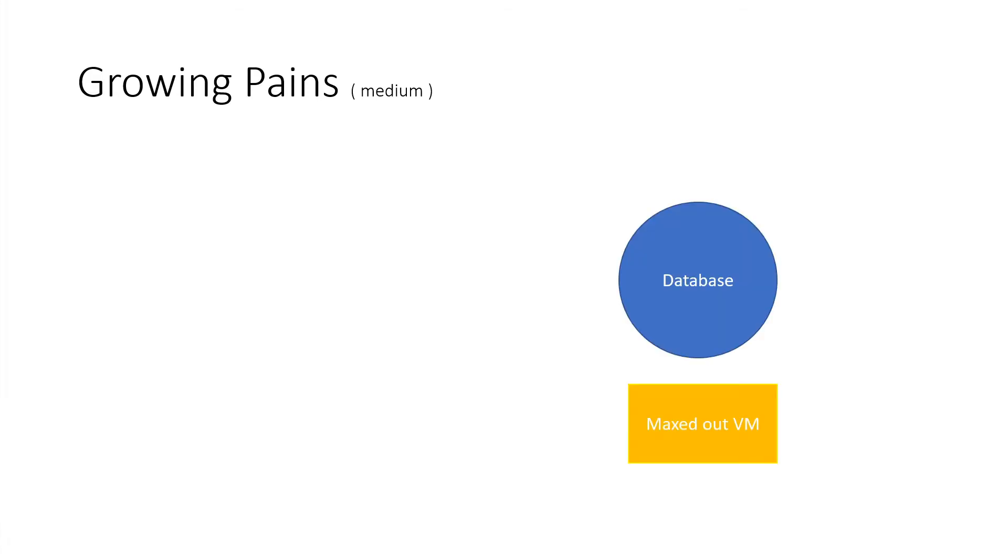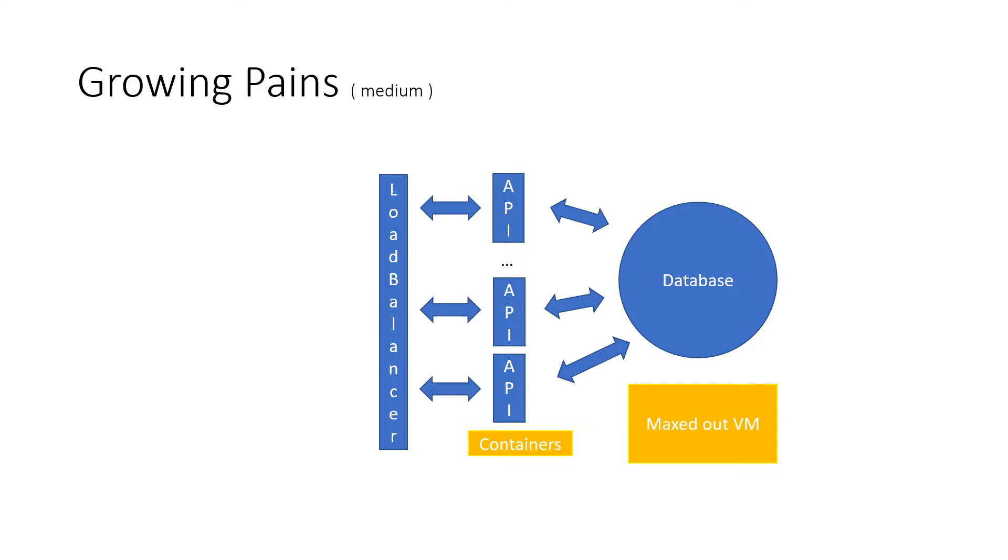We take our database and we max out the virtual machine for it. We take our API and we split it up into containers. And we put a load balancer on the front of it. This becomes our new backend. And it works for a while.